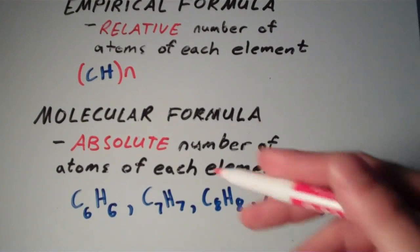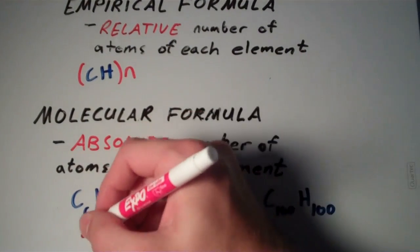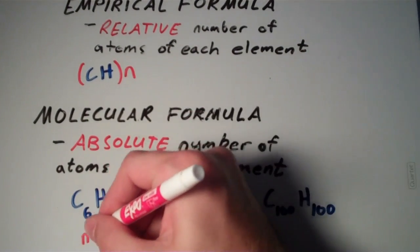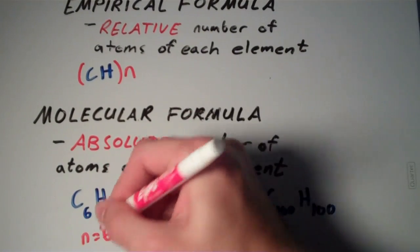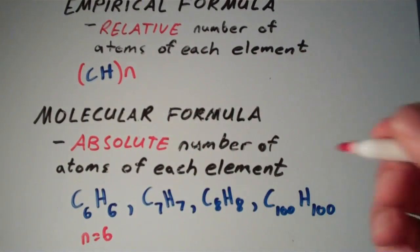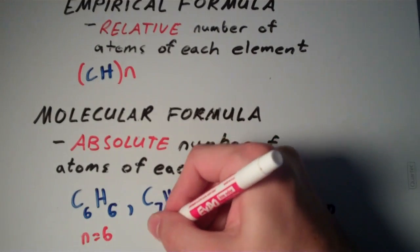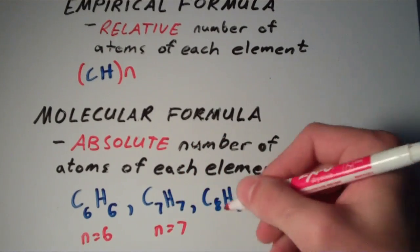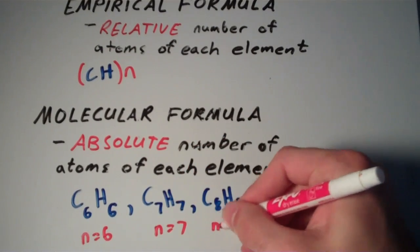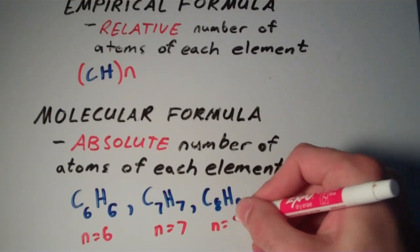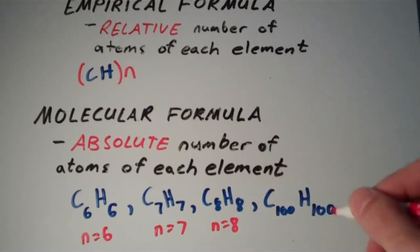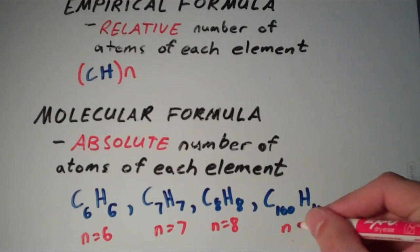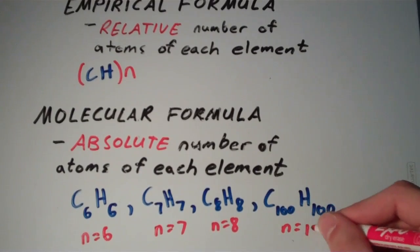In the case of C6H6, N is equal to 6. For C7H7, N would be 7; for C8H8, N would be 8; and for C100H100, N would be 100.